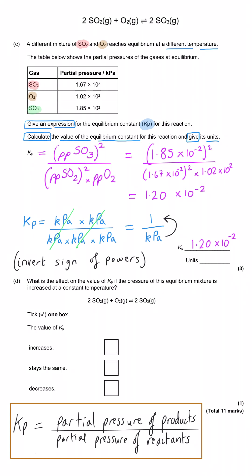So kilopascals on the bottom of the expression becomes kilopascals to the minus 1 on the top. And so that's the units for this particular Kp expression, kilopascals to the minus 1.